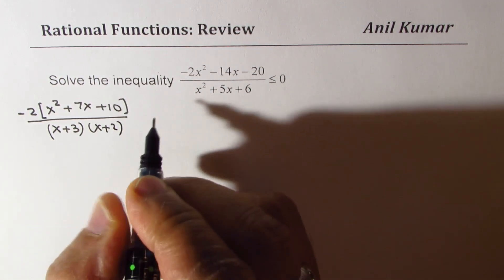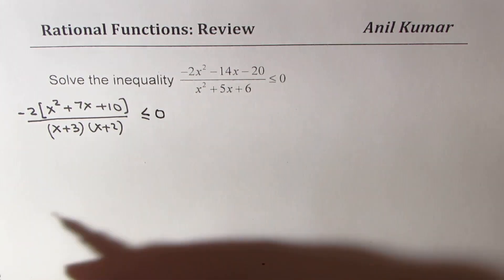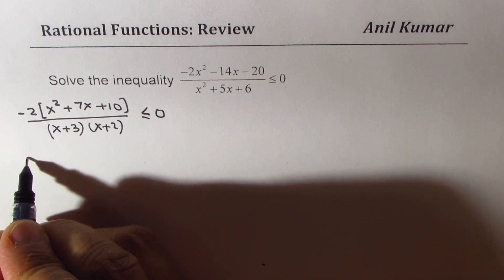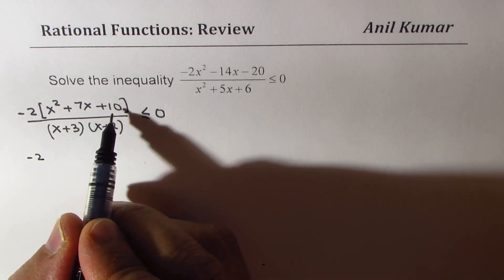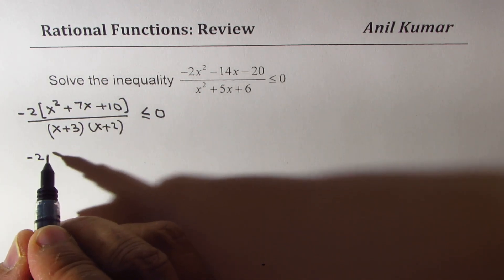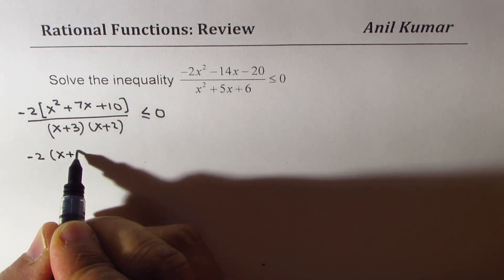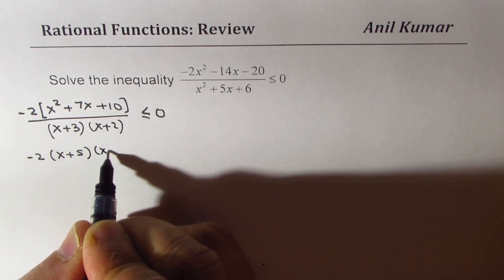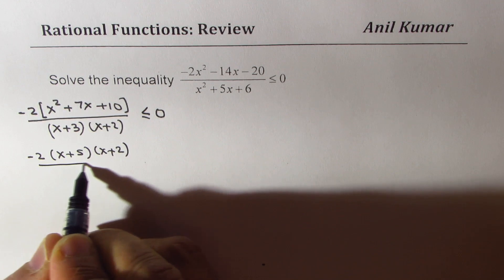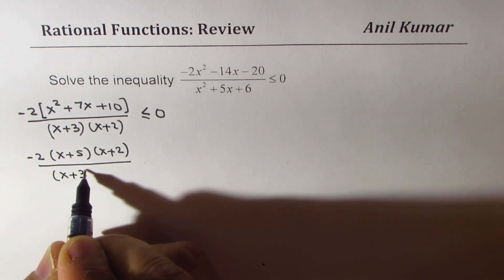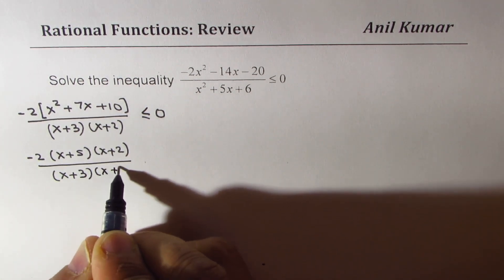So we could write this as x plus 3 times x plus 2 less than equal to 0. Now in the numerator we are looking for product of 10 sum of 7. So that is x plus 5 times x plus 2 and we have denominator as x plus 3 times x plus 2.